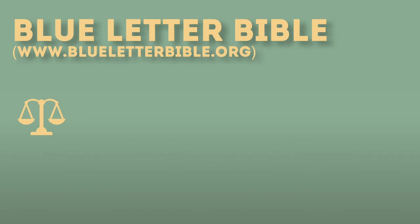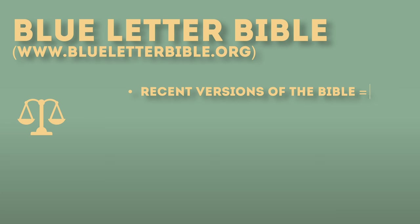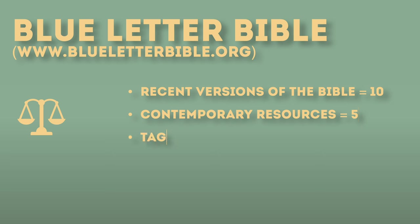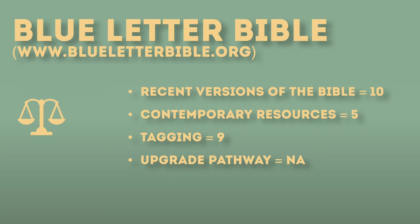Blue Letter Bible also includes interlinears, some commentaries from popular authors or older ones, and older dictionaries. It has the English Standard Version's Global Study Bible and their maps. It seems to have a more international focus in how they've laid out their resources. Score: recent versions of the Bible — 10 out of 10. Contemporary resources — maybe 5. Tagging — 9, maybe 10, and you don't need to pay for their search features. Upgrade pathway — not applicable; everything is free. Offline and cross-platform compatibility — I give this a 7, because you really need to be online to do some of the searches, and it doesn't run on all the different platforms available today.